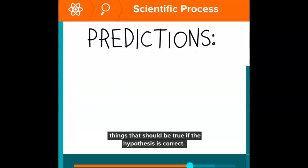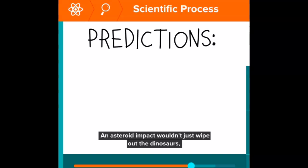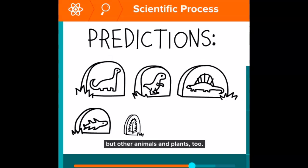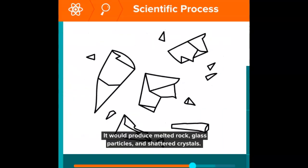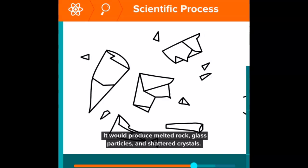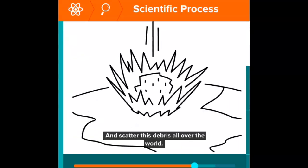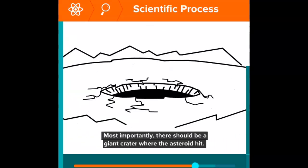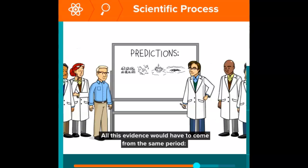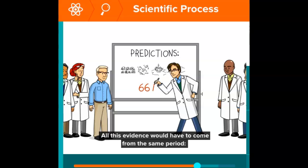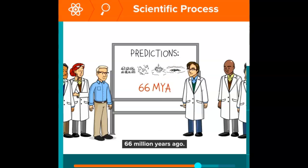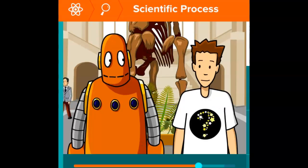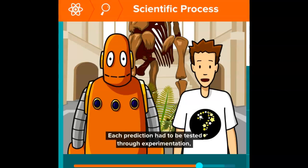Things that should be true if the hypothesis is correct. An asteroid impact wouldn't just wipe out the dinosaurs, but other animals and plants too. It would produce melted rock, glass particles, and shattered crystals, and scatter this debris all over the world. Most importantly, there should be a giant crater where the asteroid hit. All of this evidence would have to come from the same period: 66 million years ago.